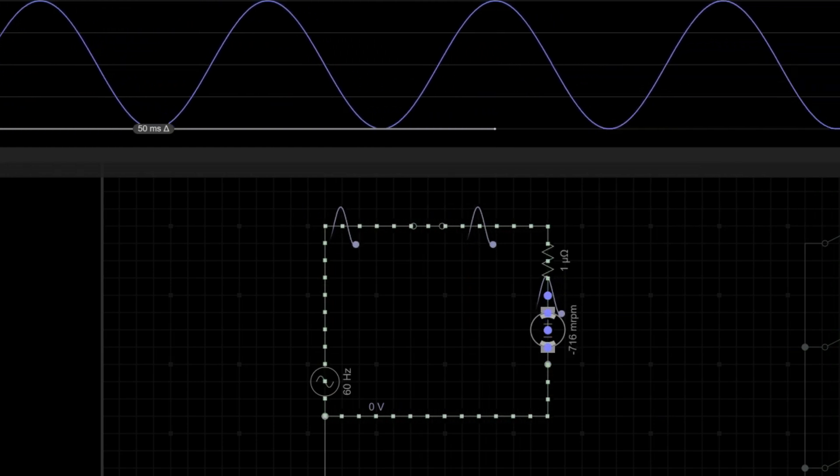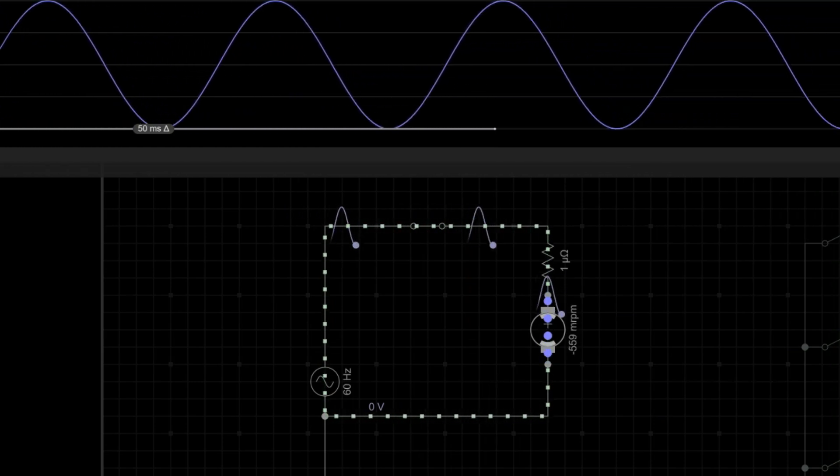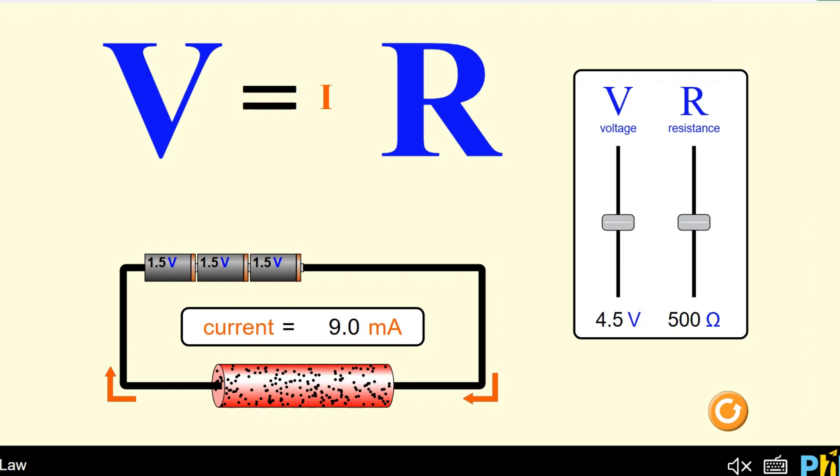Now there's two variables that will affect the speed at which power flows through a circuit. One is voltage, the other is resistance. So what I have here is a little simulator that can show us this relationship and how voltage and resistance can affect current flow or the rate of power flowing through the circuit which is measured in amps.